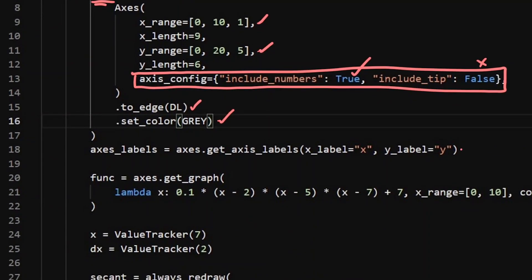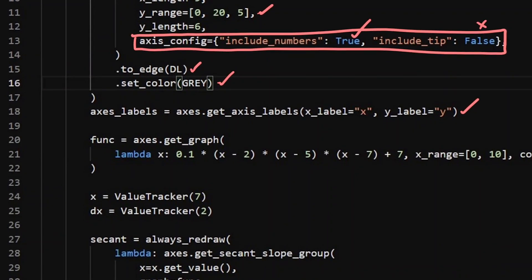Then I'm going to add some axis labels there and then I'm going to create my function. This is just some random function that sat on the screen nicely for this purpose.